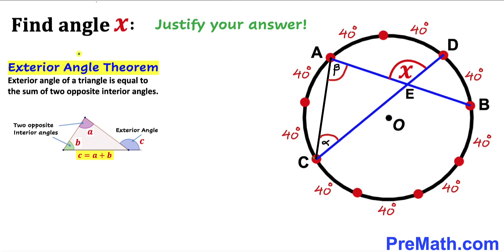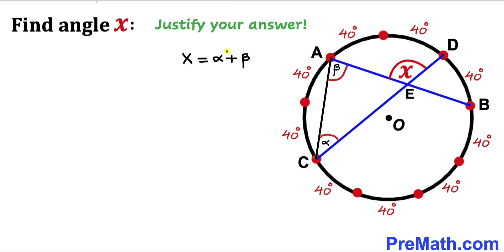According to this exterior angle theorem, this angle X must be equal to the sum of these two angles alpha plus beta. Let me write down: angle X must be equal to alpha plus beta. Our task is now to find the value of angle alpha and the value of angle beta.